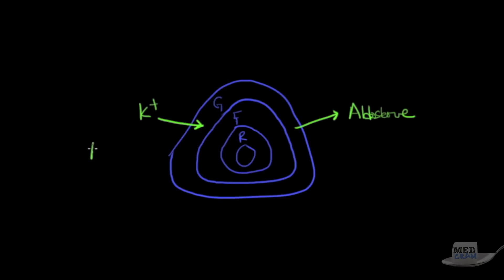The inner layer, the fasciculata, is stimulated by ACTH. That middle layer, the fasciculata, is going to make cortisol. And the inner layer is also stimulated by ACTH, and it makes testosterone.